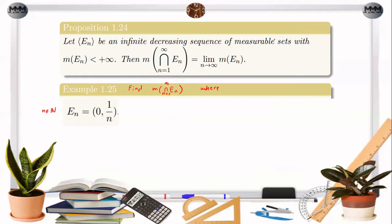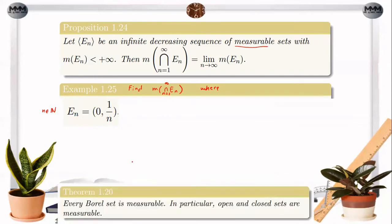The first question is: is E sub n a measurable set? Notice that our E sub n is an open set. From our previous discussion, by Theorem 1.20, open and closed sets are measurable. So an open set is a measurable set. Hence, this condition is satisfied.